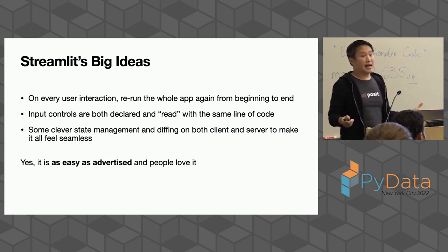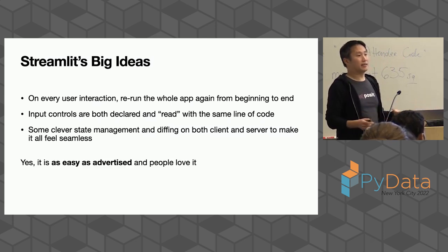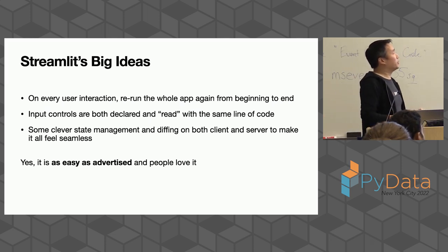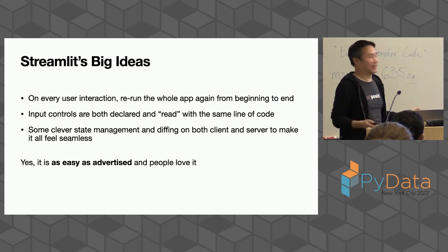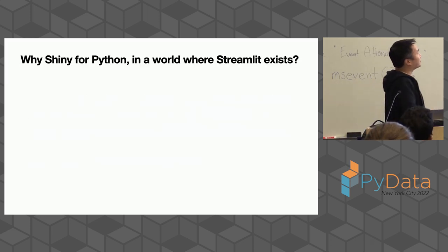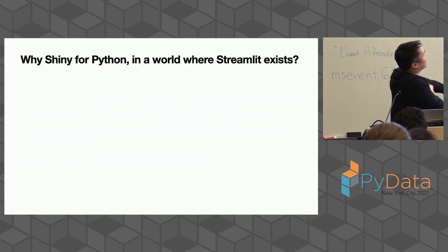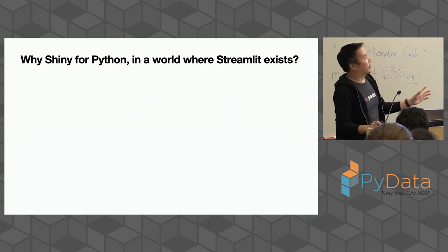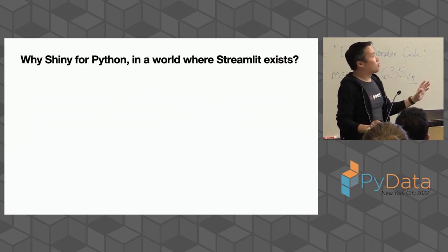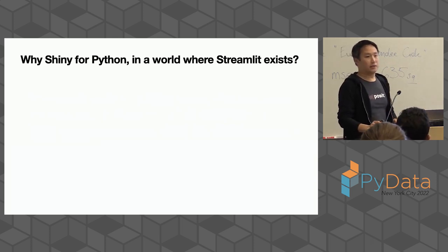And it works. It is as easy as advertised, no question. Their getting started is incredible — you could write a Streamlit app falling out of bed. You might write one by accident. Which really does raise the fair question: why Shiny for Python in a world where Streamlit exists?